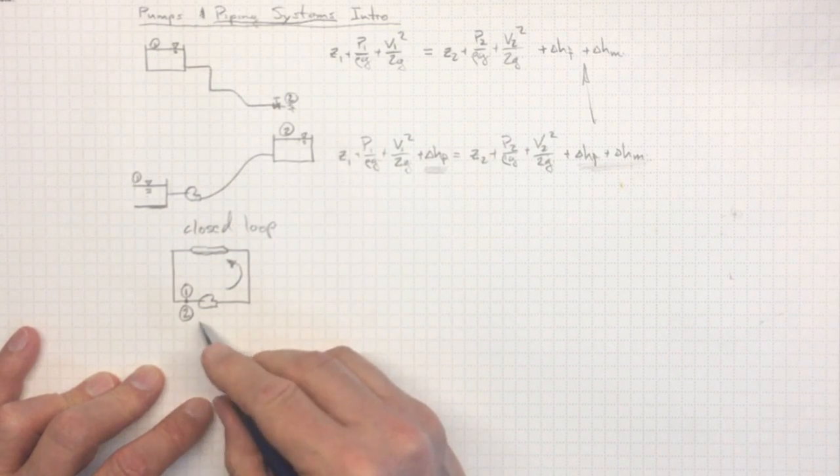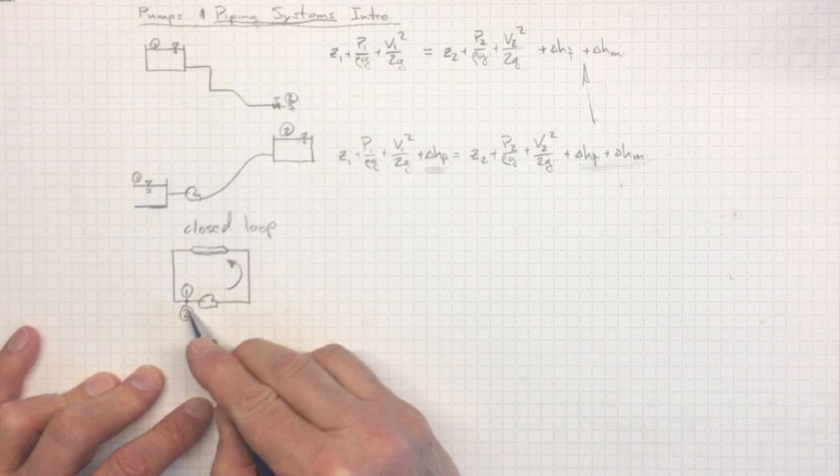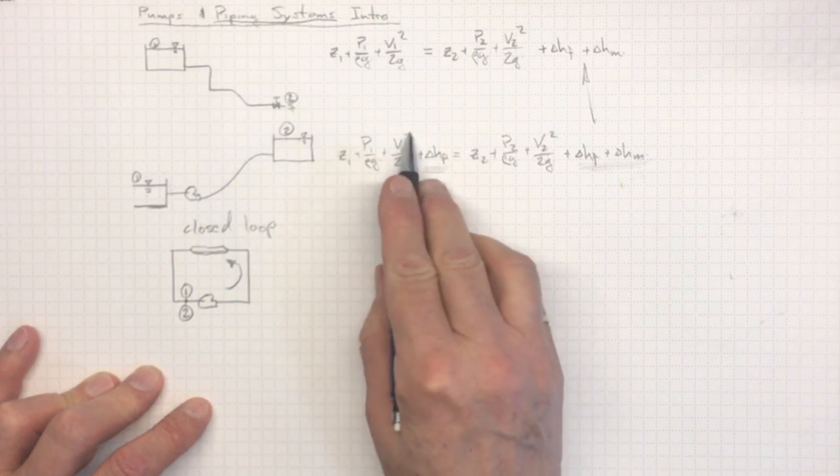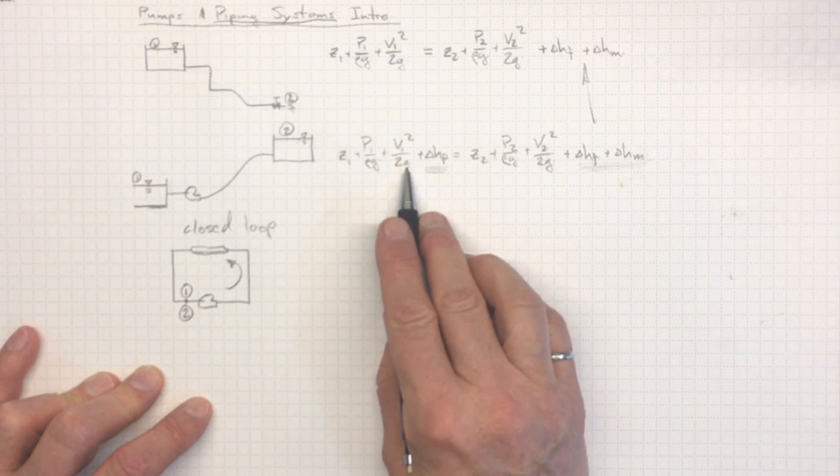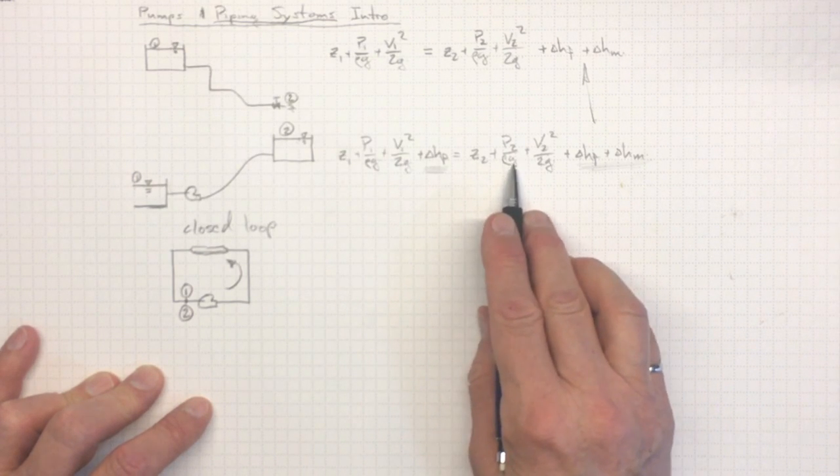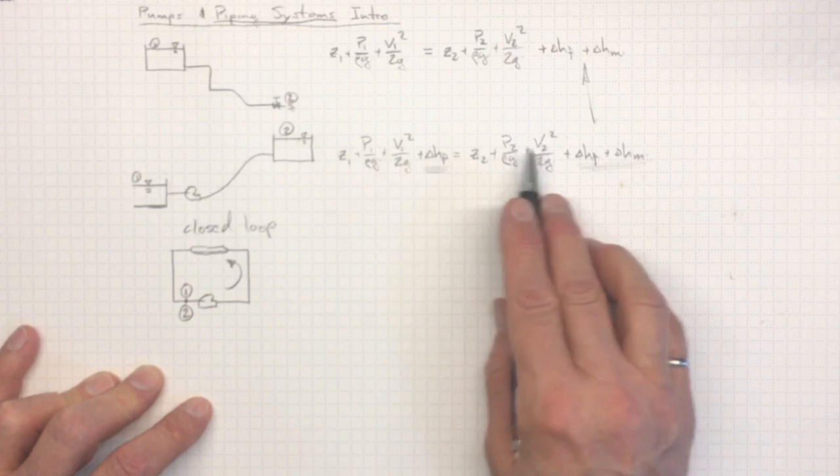It's exactly the same idea, except location one and location two are the same here. So as a result, Z1 plus P1 over rho g plus V1 squared over 2g is equal to Z2 plus P2 over rho g plus V2 squared over 2g. They're both the same point in the circulating system.